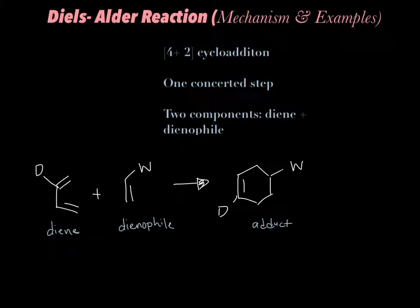Hi guys, today I'm going to go over the Diels-Alder reaction. I'll show you the mechanism, which is pretty simple, and I'll work out some examples. So first off, why is the Diels-Alder reaction so important? It actually won a Nobel Prize, so it's one of the most useful synthetic reactions in organic chemistry because many biological molecules contain rings in their structures. And as you can see, the product of our Diels-Alder reaction also contains a ring. So it's really important to know how we can form these rings.